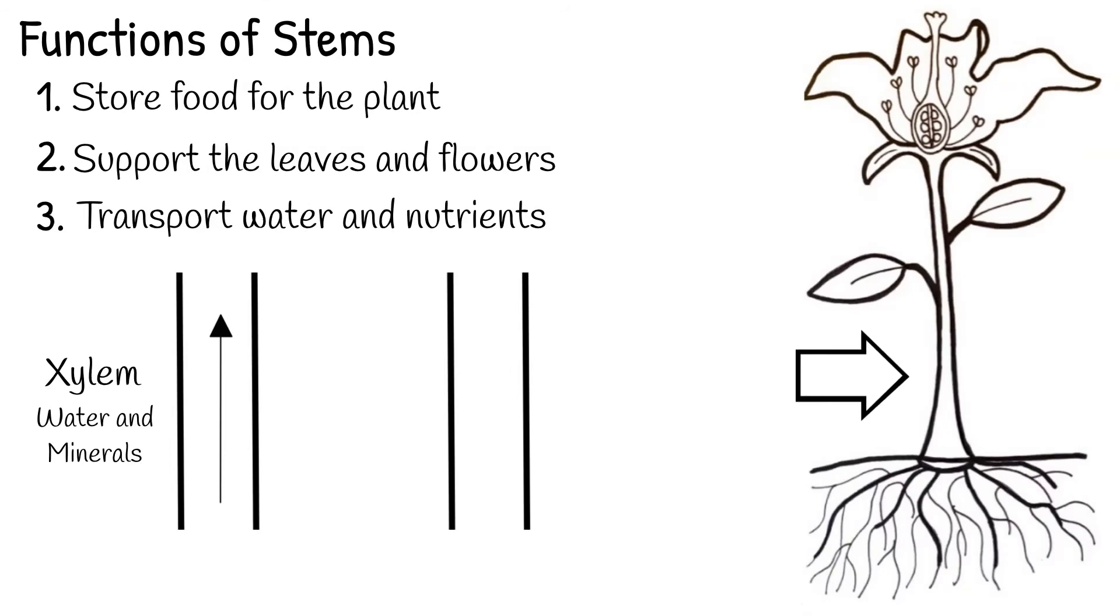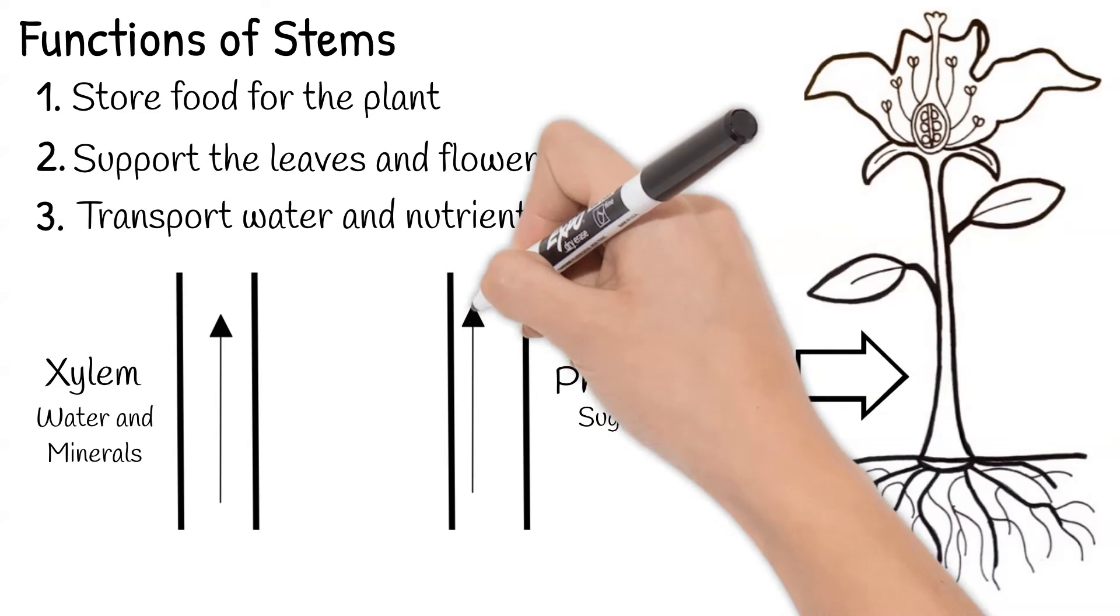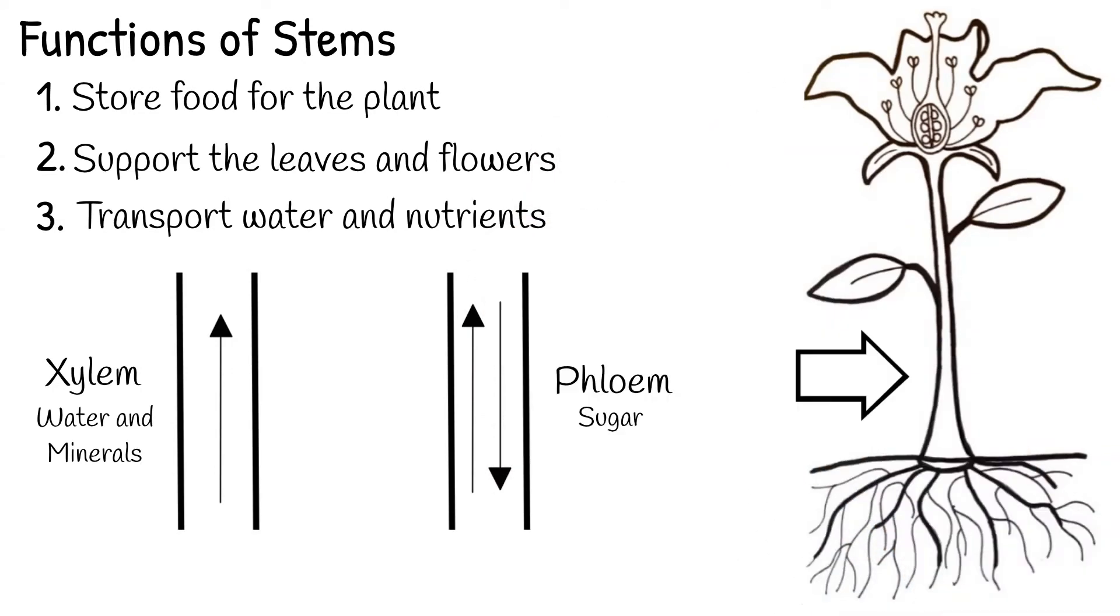The other tubes are called the phloem and they transport sugar. Sugar is the plant's food. The phloem allows sugar to move up and down the stem. This is so that it can go where the plant needs to use it or to be stored in the stem or roots for later use.